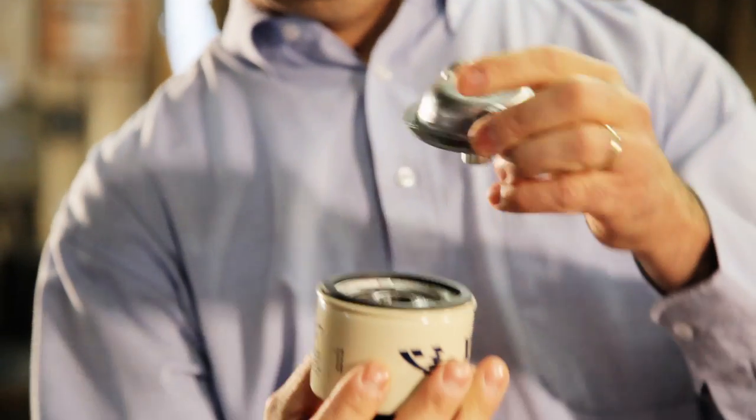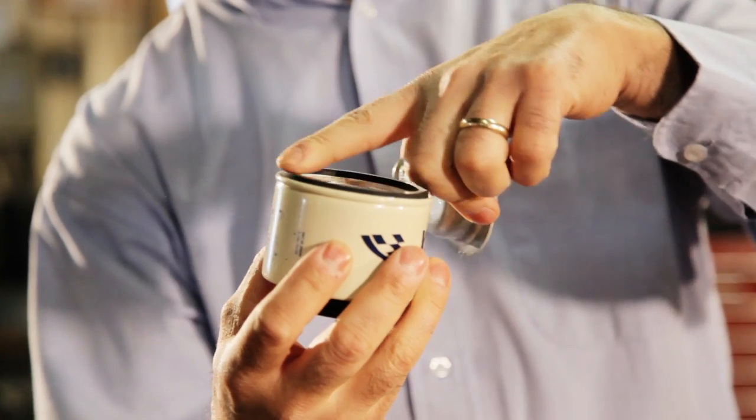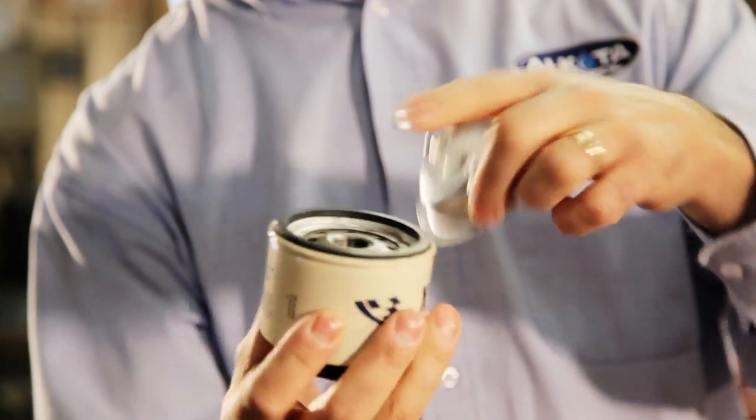A few things you want to remember when you're replacing the cartridge on a fuel filter assembly is you want to make sure you get a layer of fuel oil around the top of the rubber gasket.